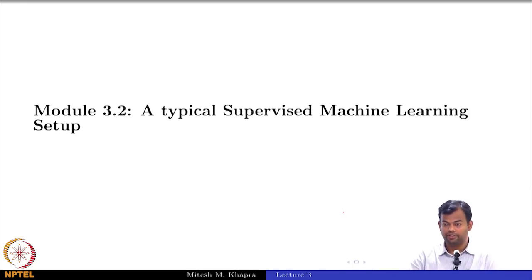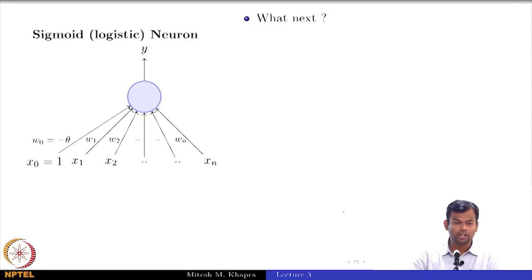We will start module 2, which brings us to a typical supervised machine learning setup. This is a very important module, please pay attention. Now we have a sigmoid neuron. We have taken care of the fact that the perceptron was a very harsh function, so we have a smooth function. Things are fine. Now, what next?